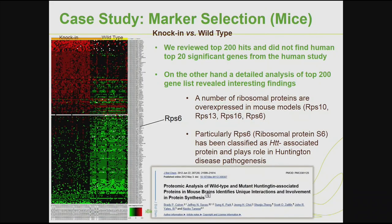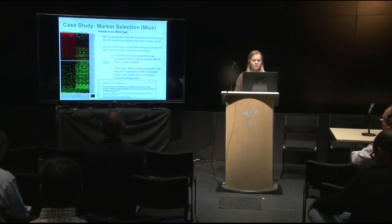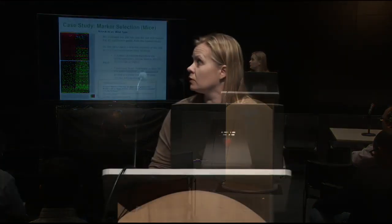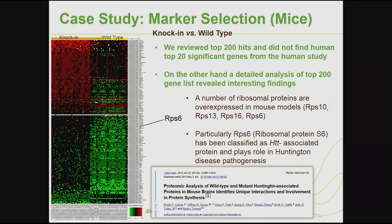We did the same approach for the mice case study and reviewed the top 200 hits. Interestingly, we did not find any human genes in the mice dataset. However, detailed analysis of the top 200 genes revealed that a number of ribosomal proteins are overexpressed in these mouse models. For example, RPS6, ribosomal protein S6, was overexpressed and has been classified as a Huntington-associated protein that plays a role in Huntington disease pathogenesis.